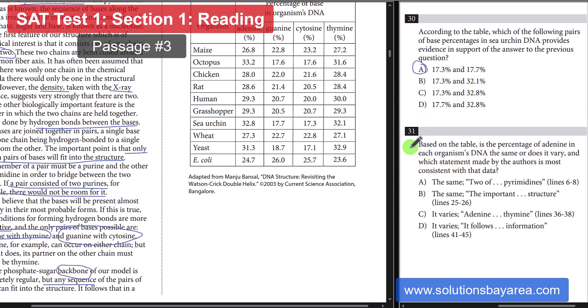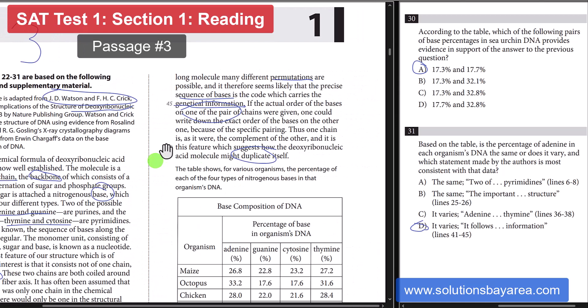31. Based on table. Is the percentage of adenine in each organism's DNA the same or does it vary? Well, obviously, look at the adenine percentages. It's all different. It is going to be D. It definitely varies. Let's look at 41 to 45. We're going to go back there. Talks about how there are different permutations that are possible of the bases. And that the sequence of the bases is what carries the genetic information. So, obviously, every organism is going to have a different sequence of bases because the genetic code is different.